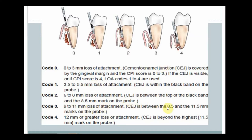For Code 3 and Code 4, tooth mobility will be Grade 2 or Grade 3. This is the actual sign of periodontitis. Remember, loss of attachment codes 1 through 4 are only used under two criteria: the CEJ must be visible, or the CPI score must be 4; otherwise, the code will be 0. That concludes the periodontal indices — Russell's Index, CPITN, and CPI with loss of attachment.